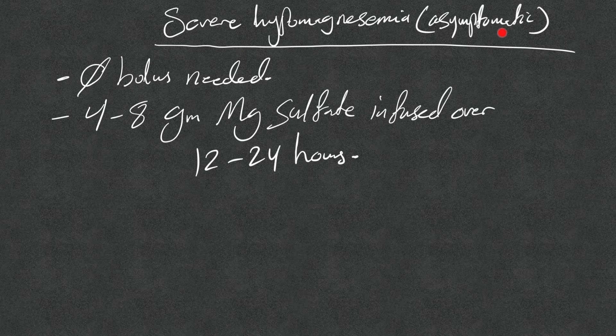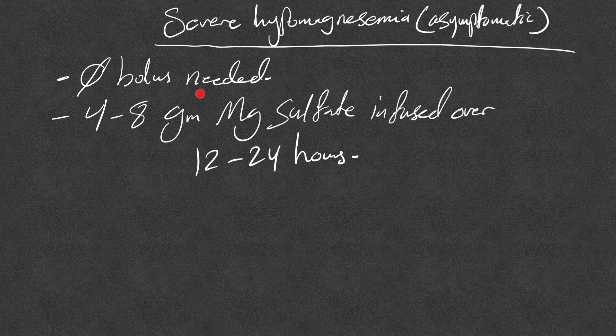For severe hypomagnesemia who are asymptomatic, there is no bolus needed. We give 4 to 8 grams of magnesium sulfate. Magnesium sulfate is always given in grams.